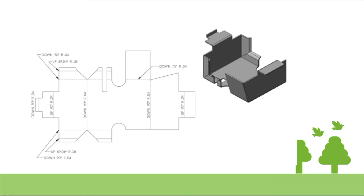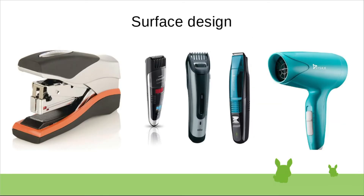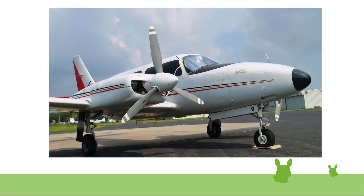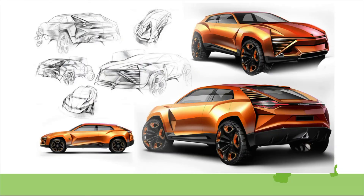In the next Wireframe and Surface Design workbench, we will create the outer surface body of different products — for example, stapler plastic body, trimmer and hair dryer body, helmet and mouse outer body. We also use it to design digital concepts of airplane surfaces, car design, and bike design.